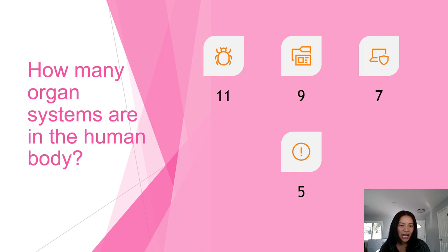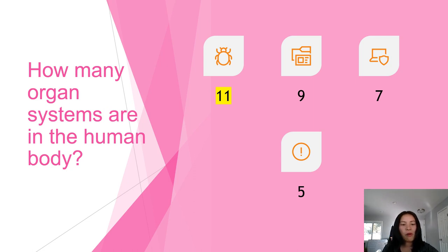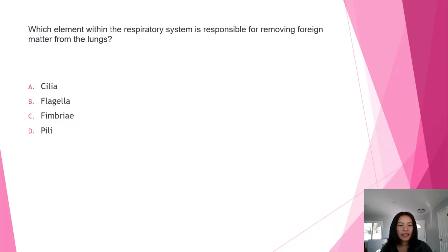Next question: how many organ systems are in the human body? Is it 11, 9, 7, or 5? The answer is 11. This question also appeared in a previous video. I can't enumerate all of them, but there are 11 organ systems.